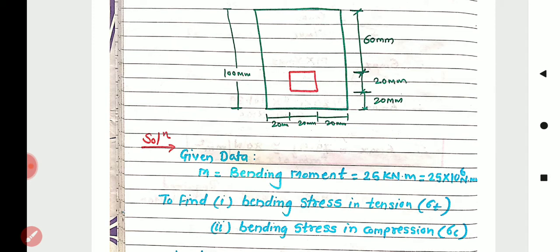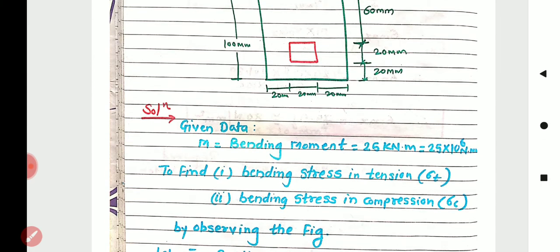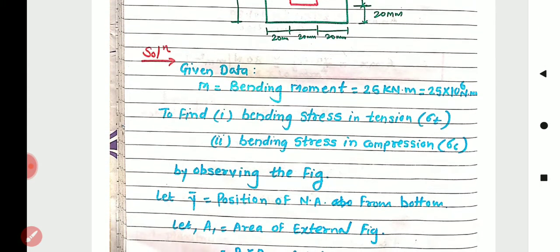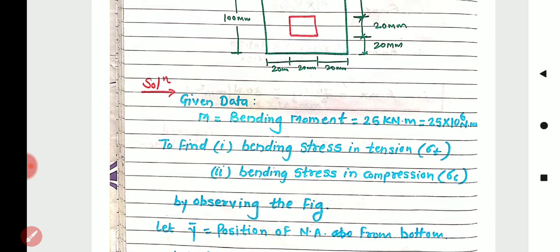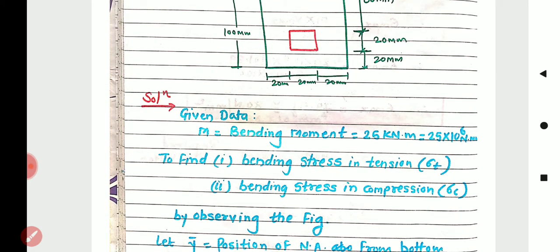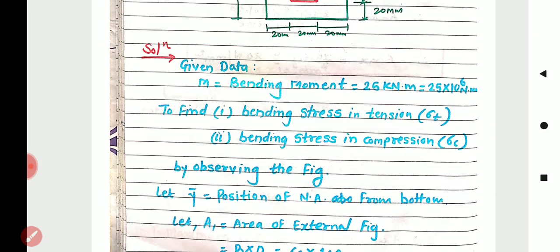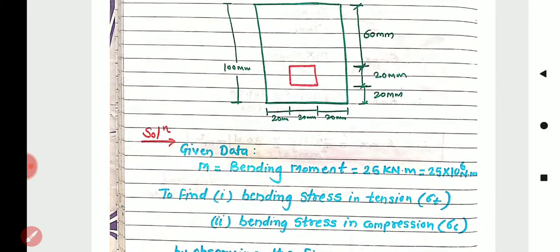Bending moment is 25 kNm — convert it into newton-millimetre. This is very important: we will find the maximum bending stress in newton per mm², so whatever units are given, you need to convert them to newtons and millimetres. We need to find bending stress in tension (σt) and bending stress in compression (σc).